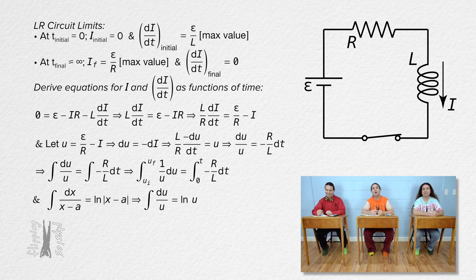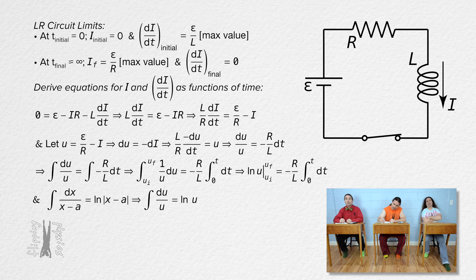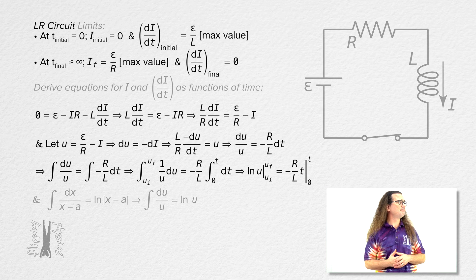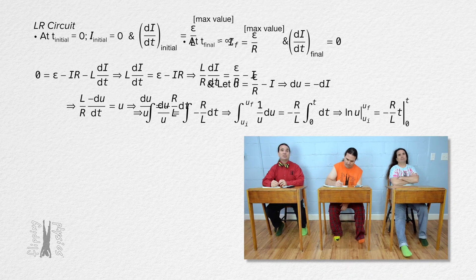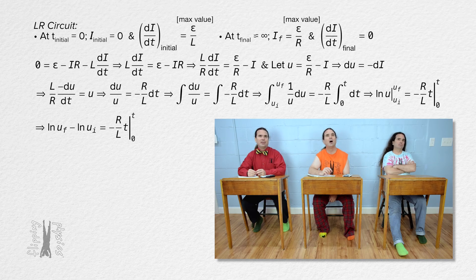The left-hand side of the equation is the natural log of u from u-initial to u-final. The right-hand side: resistance and inductance are constants and can be taken out from the integral, and the integral of 1 with respect to time is just time. Substituting in initial and final conditions on the left-hand side: the natural log of u-final minus the natural log of u-initial equals the natural log of u-final divided by u-initial.